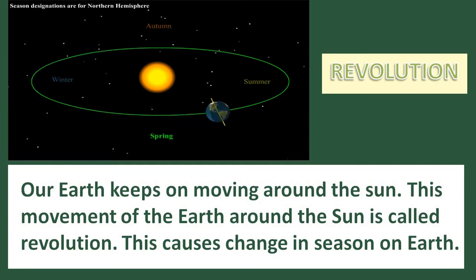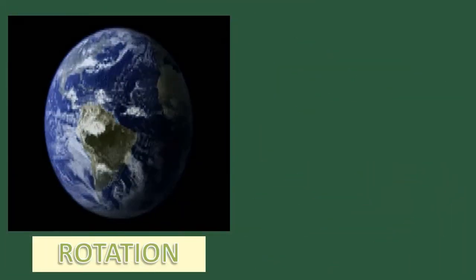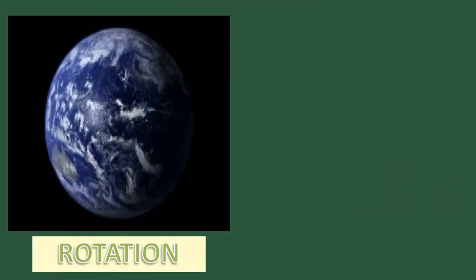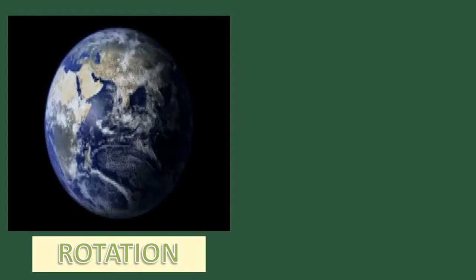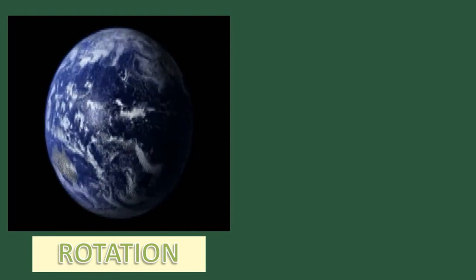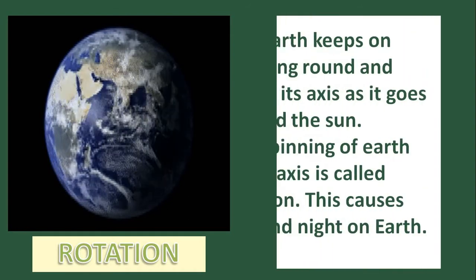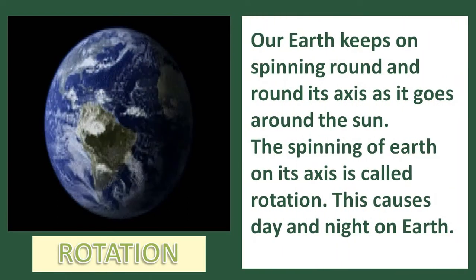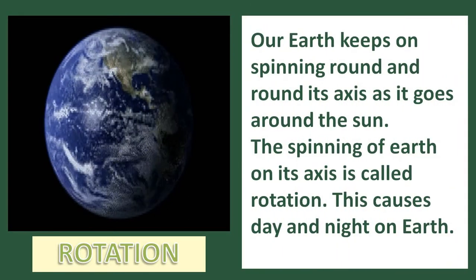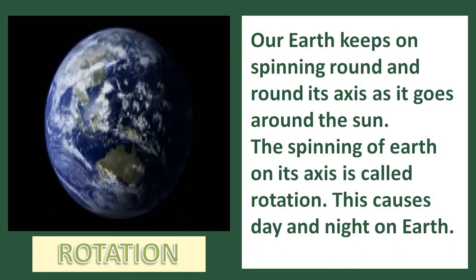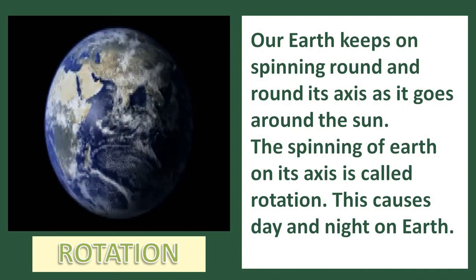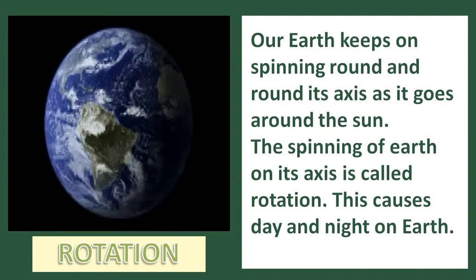Because of this revolution, we experience different seasons on the Earth. Along with this movement around the sun, Earth keeps on moving round and round on its axis, just like a top. This spinning of Earth on its axis is called rotation, and because of the rotation of the Earth, there is formation of day and night.